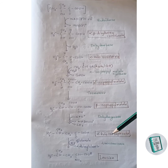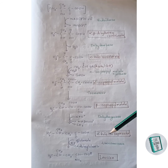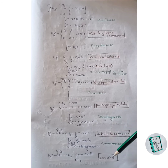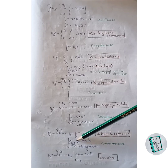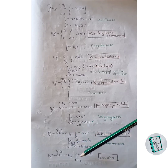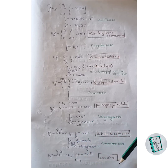Alpha-ketoisocaproate undergoes a transamination reaction in which the keto group is replaced with an amino group, forming leucine. This completes the synthesis of leucine.